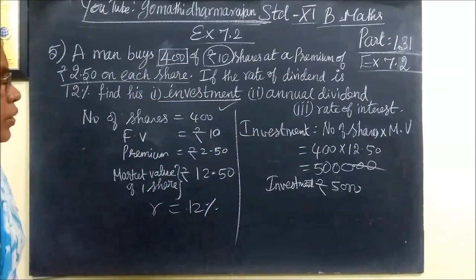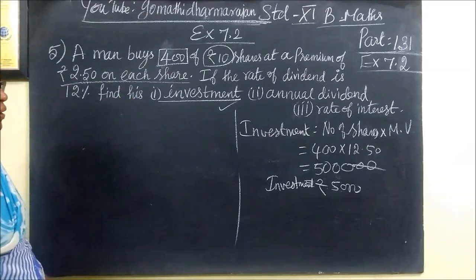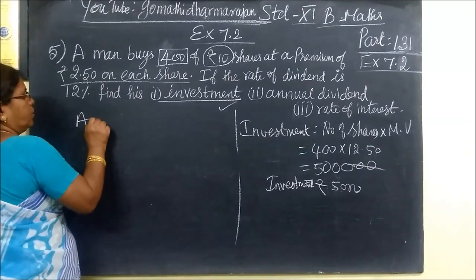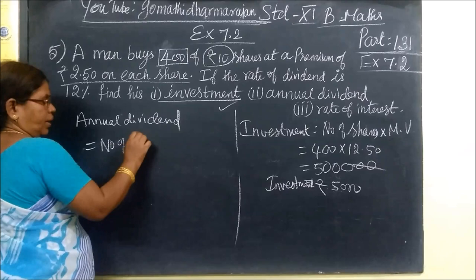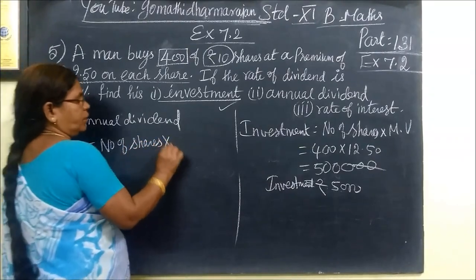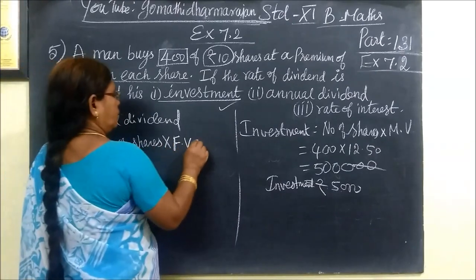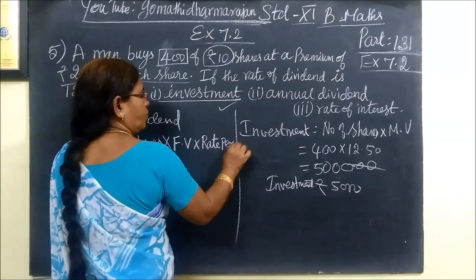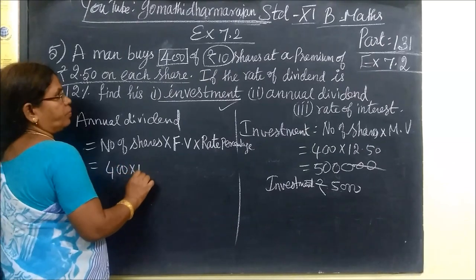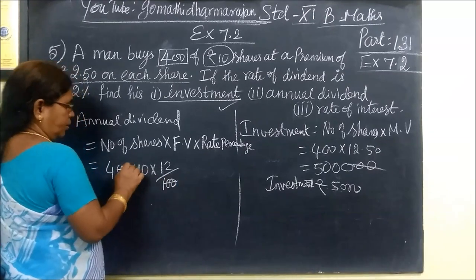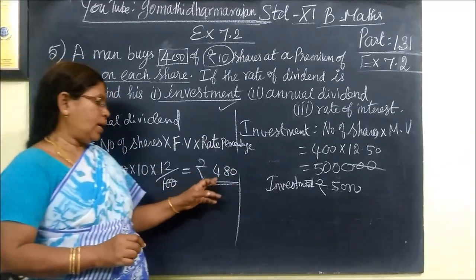Next, we calculate the annual dividend. The dividend rate is fixed with the face value. The face value is Rs.10, and the rate is 12%, so the annual dividend is 400 shares multiplied by Rs.10 multiplied by 12%, giving Rs.480 per year.